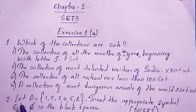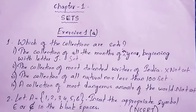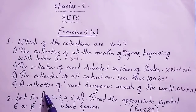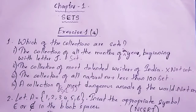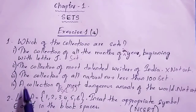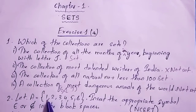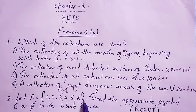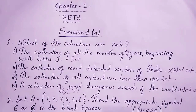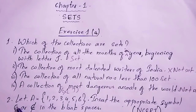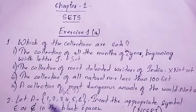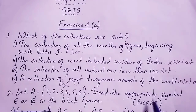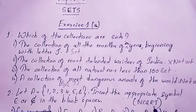Moving on to Question 2. Whenever you write the elements of a set, they are always shown in curly brackets — not regular or square brackets, those are wrong. Let A equal the set with elements 1, 2, 3, 4, 5, and 6. You have to insert the appropriate symbol: belongs to (∈) or does not belong to (∉) in the blank spaces.